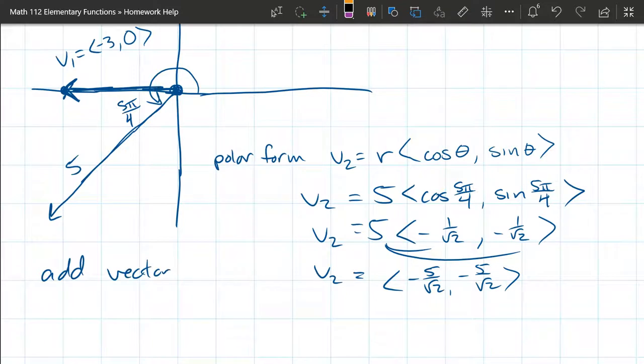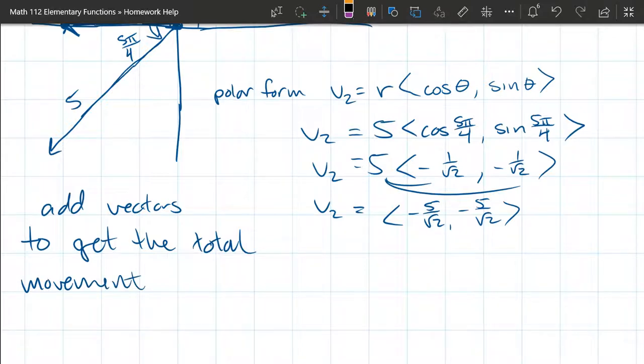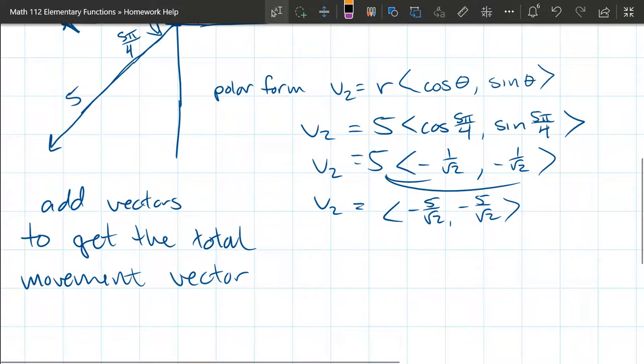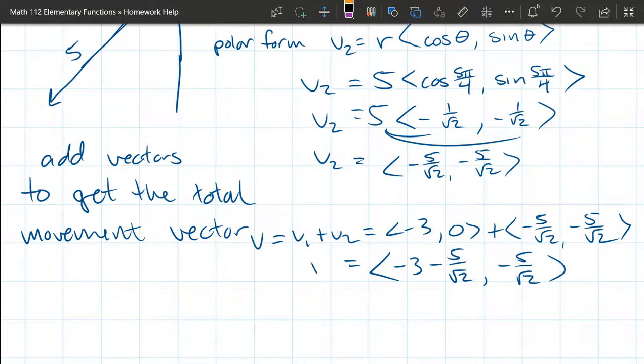Now we're going to add the vectors to get the total movement vector. So V1 plus V2: we add <-3, 0> plus <-5/√2, -5/√2>. We add the x's together, don't really need to do anything more than write these two numbers next to each other. The y coordinate is just -5/√2. We'll call this just regular V right here.